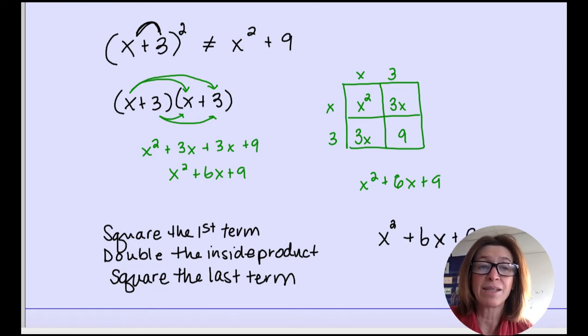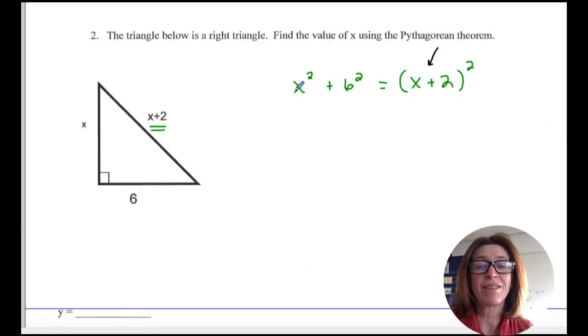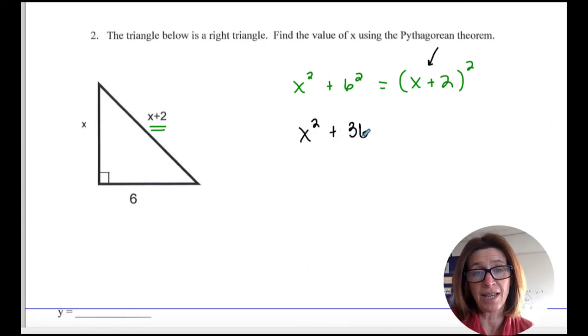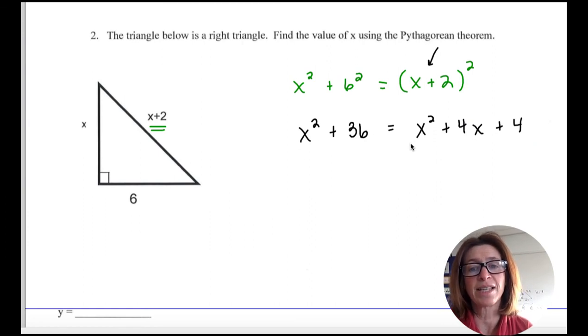And that's where we had some issues. A lot of you just distributed your 2. So this should have given us x squared plus 36 equals x squared plus 4x plus 4. That should have given us x squared plus 6x equals x squared plus 4x plus 4.